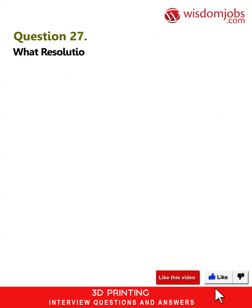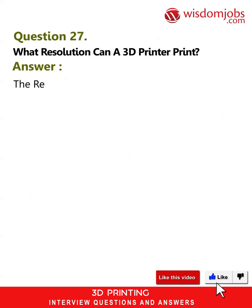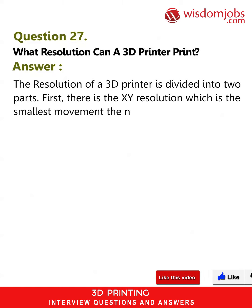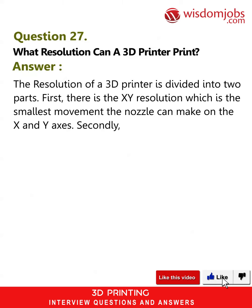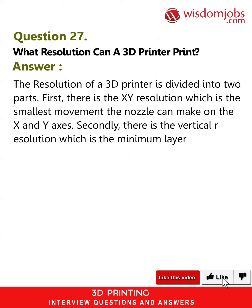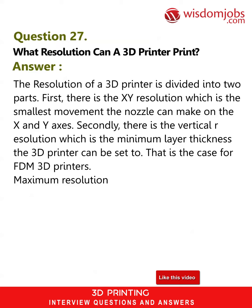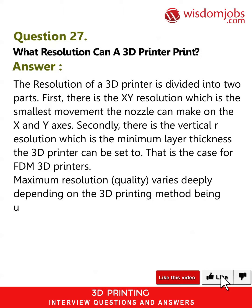Question 27: What resolution can a 3D printer print? Answer: The resolution of a 3D printer is divided into two parts. First, there is the XY resolution, which is the smallest movement the nozzle can make on the X and Y axes. Secondly, there is the vertical resolution, which is the minimum layer thickness the 3D printer can be set to. That is the case for FDM 3D printers. Maximum resolution quality varies deeply depending on the 3D printing method being used.